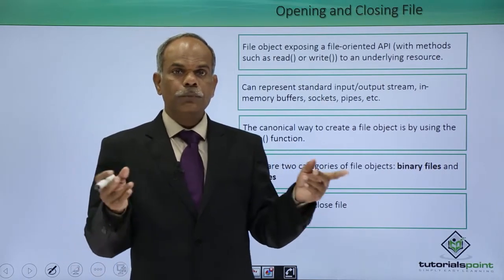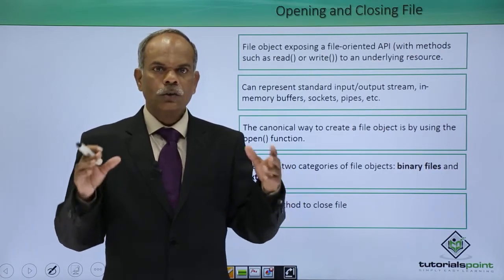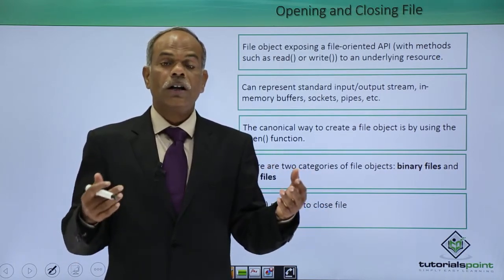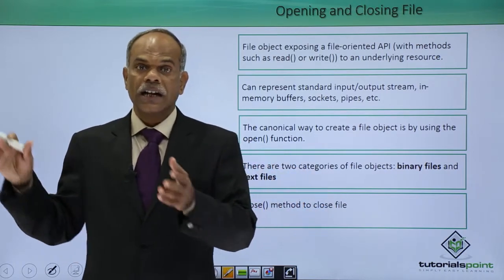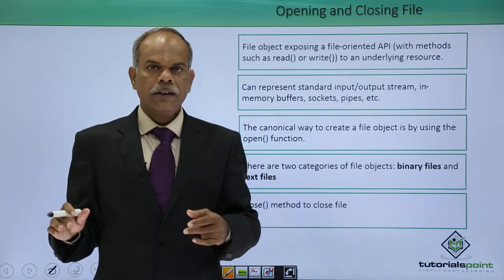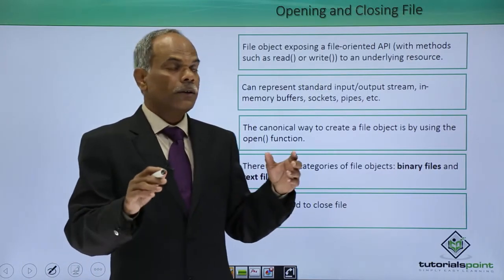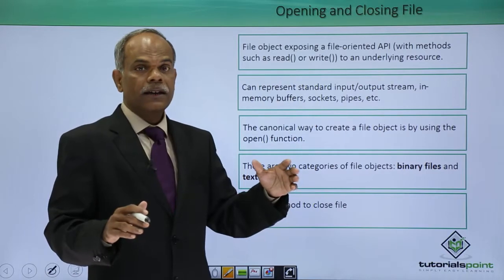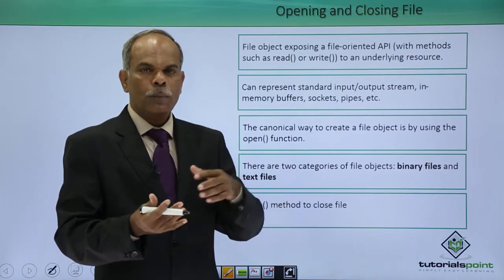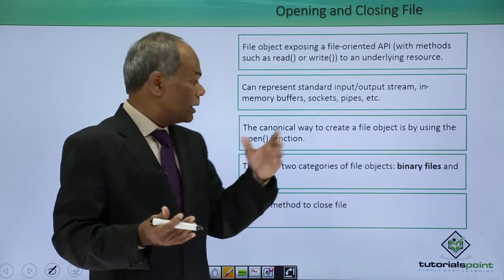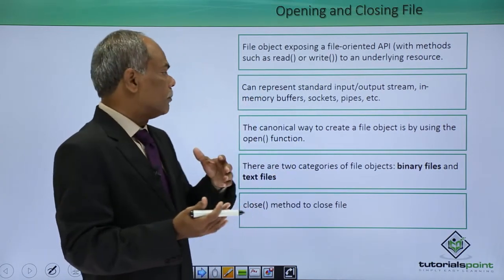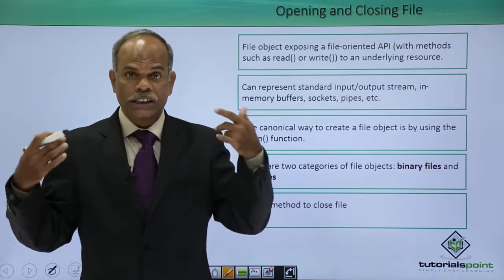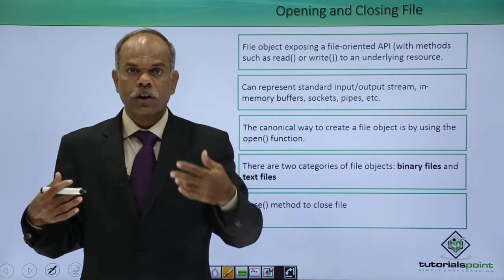Now instead of these standard input and output devices, if you want to send and receive data from any other alternative source or store data at any other alternate destination, then you have to use the file API. This file API has functions for opening a stream to either the disk, buffer, sockets, or pipes. These are destinations or sources for receiving or storing data.